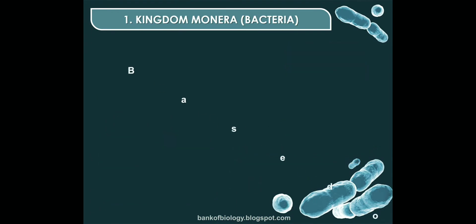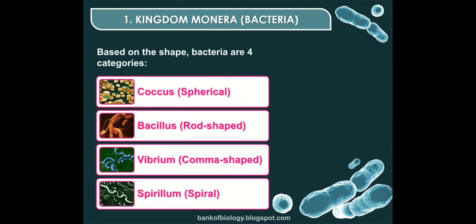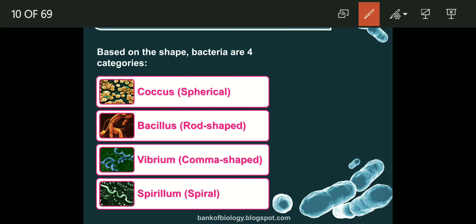After that, we study the shape of bacteria — how they look. On the basis of their shape, bacteria are classified into four categories: coccus, which is a spherical shape; bacillus, which is a rod shape; vibrio, which is a comma shape; and spirillum, which is a spiral shape.